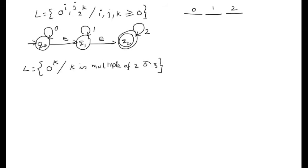We will see one more example for NFA with Epsilon transitions. Here L is defined as 0 power k, such that k is a multiple of 2 or 3. This cannot be solved in a single step. First we need to design a finite automaton for 0 power k where k is a multiple of 2, and then another finite automaton for 0 power k where k is a multiple of 3.